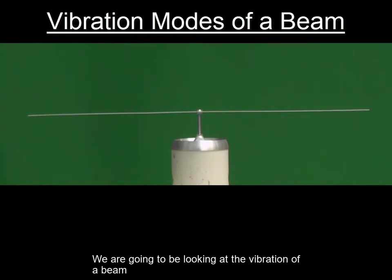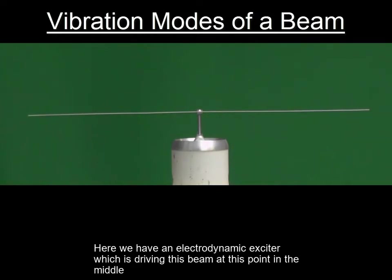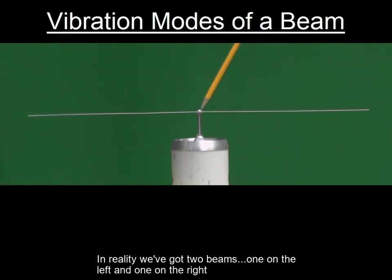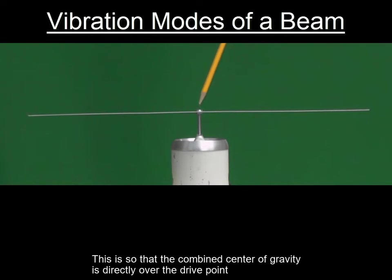We're going to be looking at the vibration of a beam. Here we have an electrodynamic exciter which is driving this beam at this point in the middle. In reality, we've got two beams, one on the left and one on the right. This is so that the combined center of gravity is directly over the drive point.